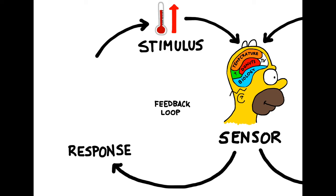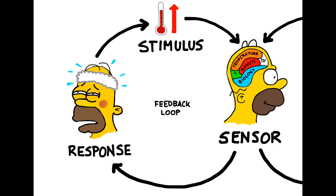In humans, a temperature change would be detected by the hypothalamus, but obviously Homer Simpson's brain is a little bit different. Because high temperatures can cause cell death, the body then goes into action to bring its core temperature down. Blood vessels will dilate, allowing heat to radiate outwards, and the person will also begin to sweat in order to decrease their body temperature via evaporative cooling.